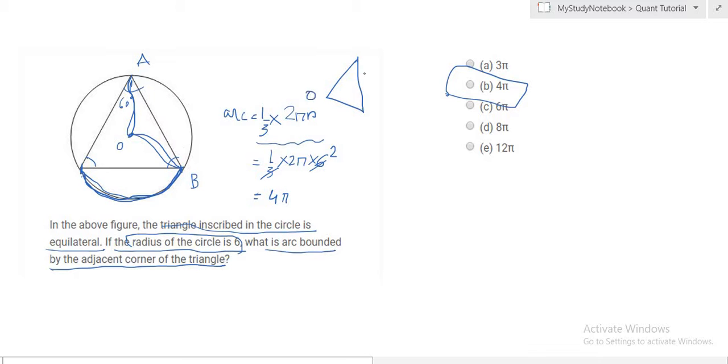So OA and OB are both radii of the circle, so we know the value to be 6. We also know this is an equilateral triangle, so each angle is 60 degrees.